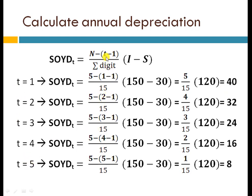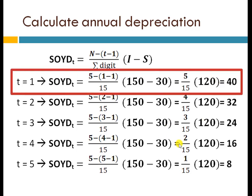Continue until year 5. For each year, you only change little t to the corresponding time — for example, if you want year 3, set little t to 3. The depreciation in year 5 is 8. Notice the pattern: the depreciation value at the beginning is higher than straight-line depreciation, but it slowly decreases until it meets the end of the useful life.